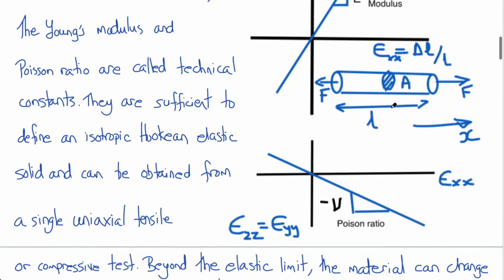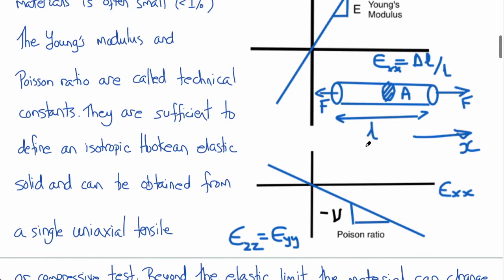Another experiment that can be done in a linearly elastic material is to measure the ratio of the transverse strain components, for example, E_zz or E_yy in this direction, in proportion to strain in the longitudinal or loaded direction, in this case, E_xx.